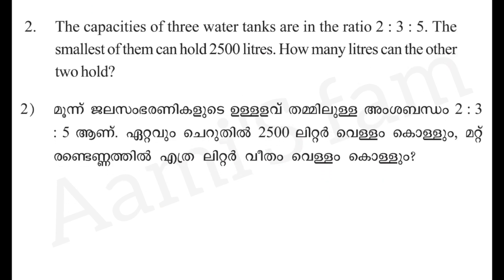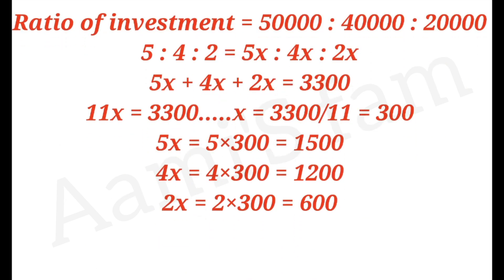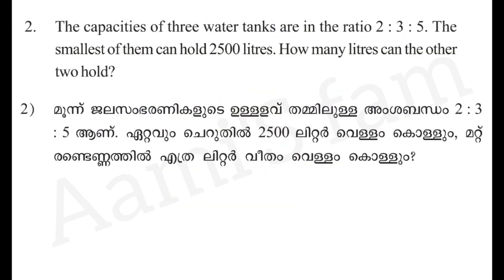Next question: the capacity of three water tanks are in the ratio 2 is to 3 is to 5. The smallest of them can hold 2500 liters. How many liters can the other two hold? The capacity ratio gives us 2x, 3x, and 5x.